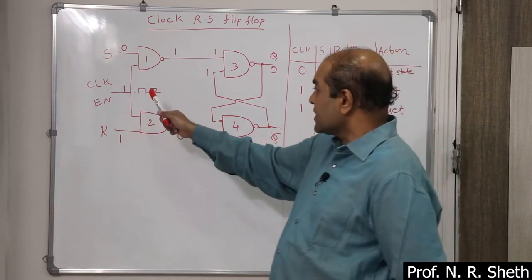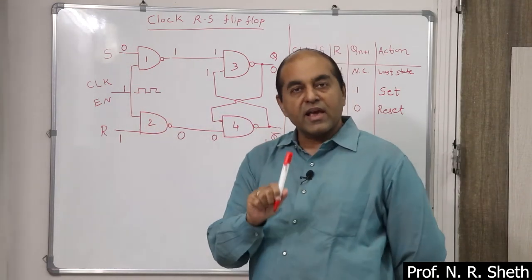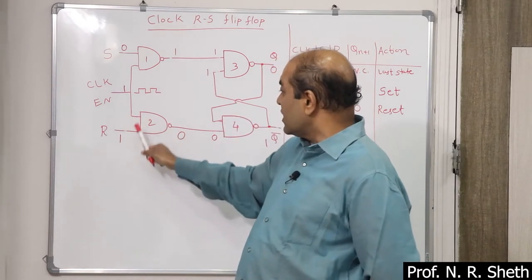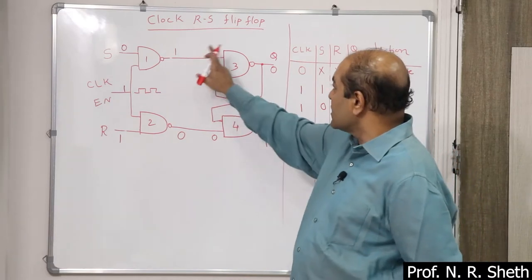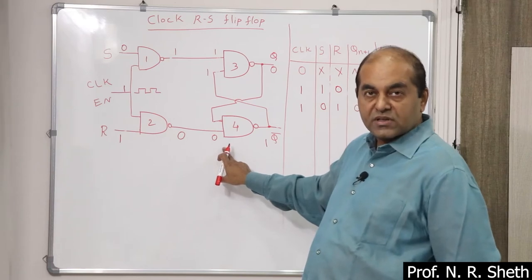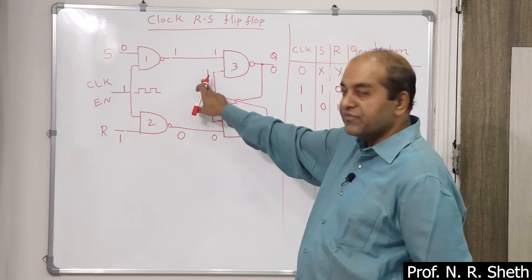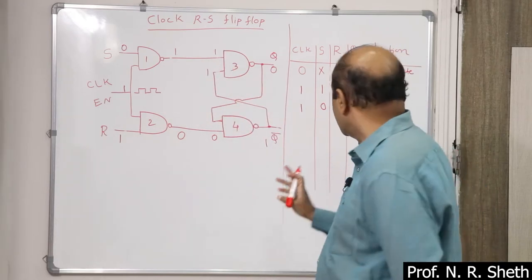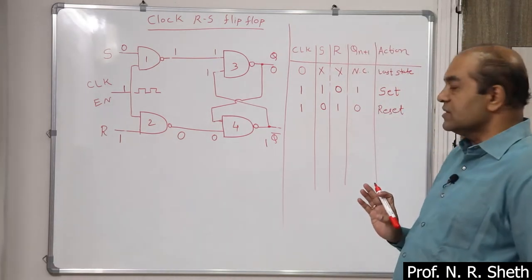Again confirming: clock is high, S is 0, R is 1. In NAND gate when any input is 0, output is 1, so gate 1 output is 1. Gate 2 has both inputs high so output is 0. Gate 3 has one input 0 so output is 1, Q bar is 1. 1 feeds back, and with gate 4 both inputs become 1 making output 0, so Q is 0. The flip-flop is reset.